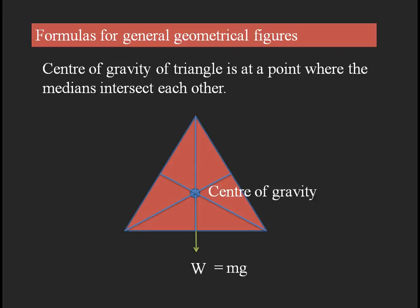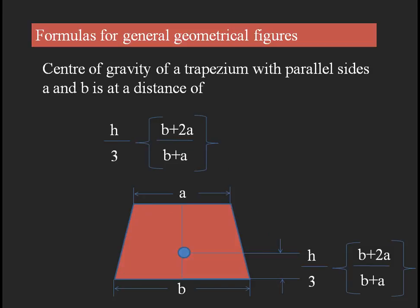For a triangle, the center of gravity is found by drawing the medians — lines which exactly divide each corner angle into two equal parts. When you draw more than two medians for the triangle, the intersecting point of those medians gives you the center of gravity, which is the point at which the whole weight of the body acts.